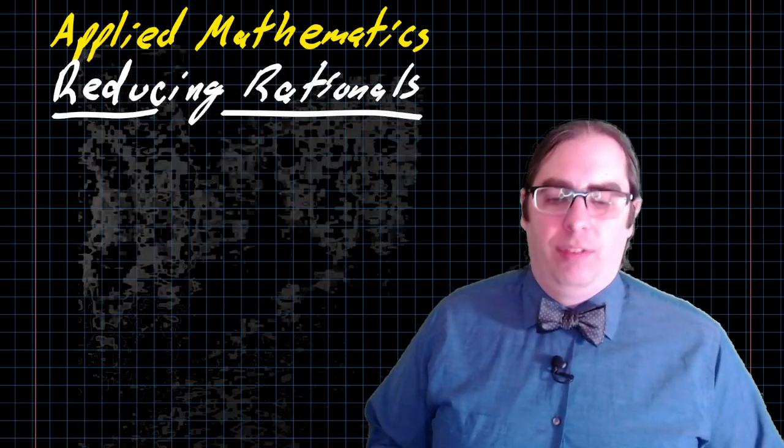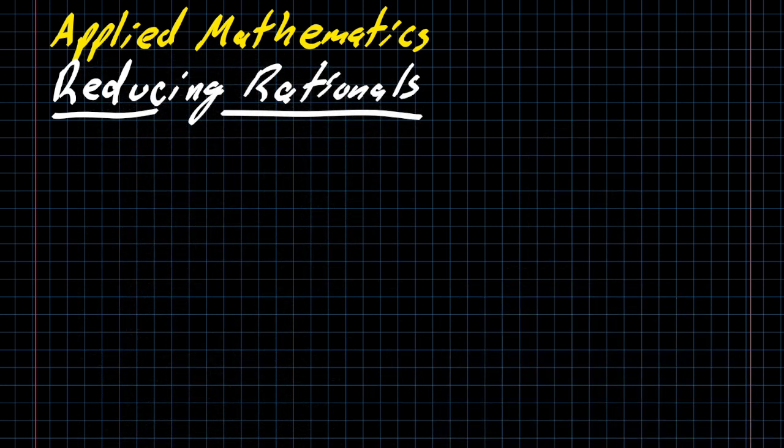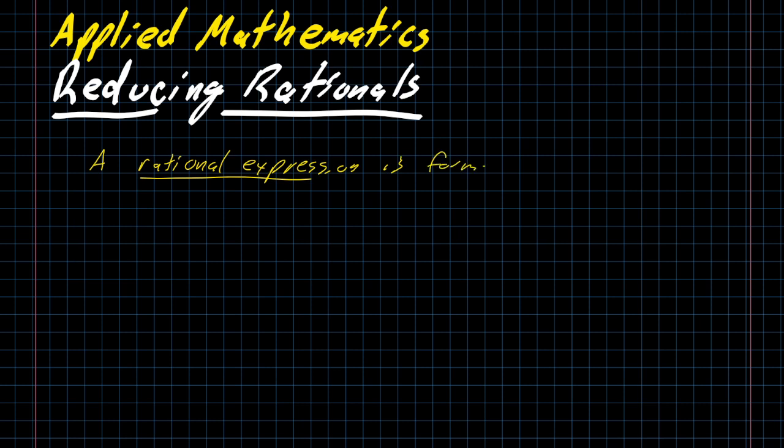Before we can do that, I have to go into what is a rational. The simplest definition: a rational expression is formed by dividing two polynomials.